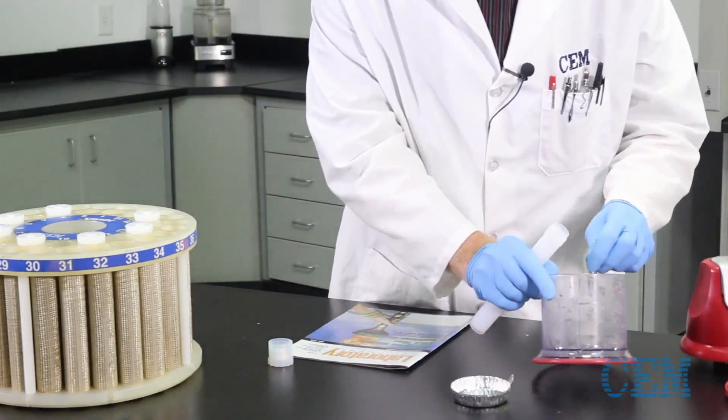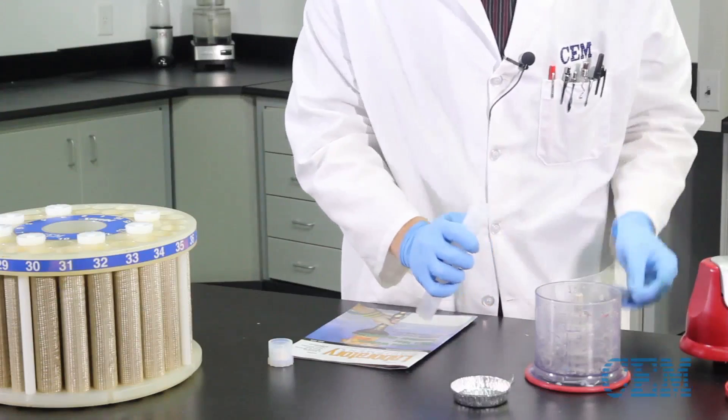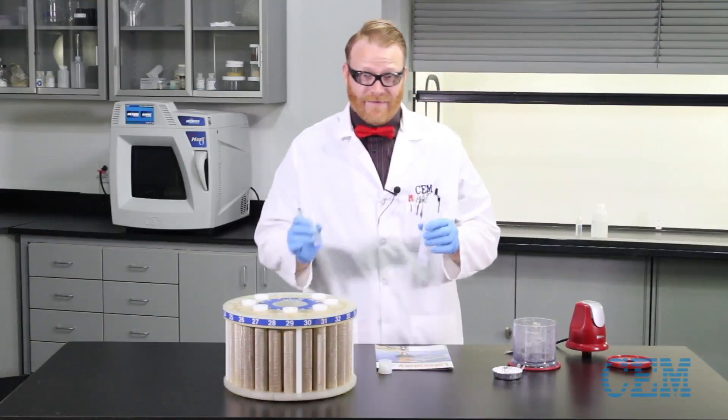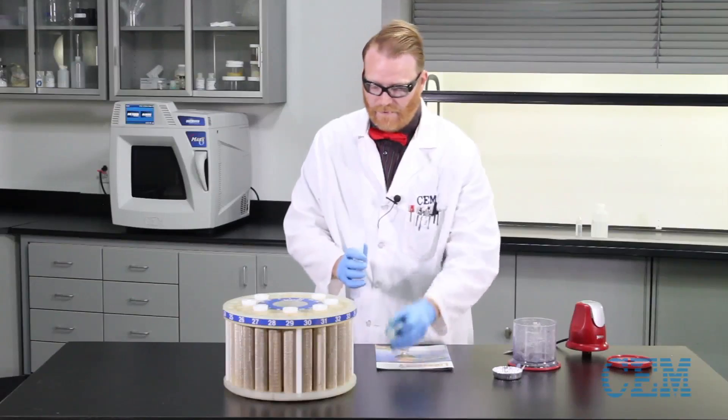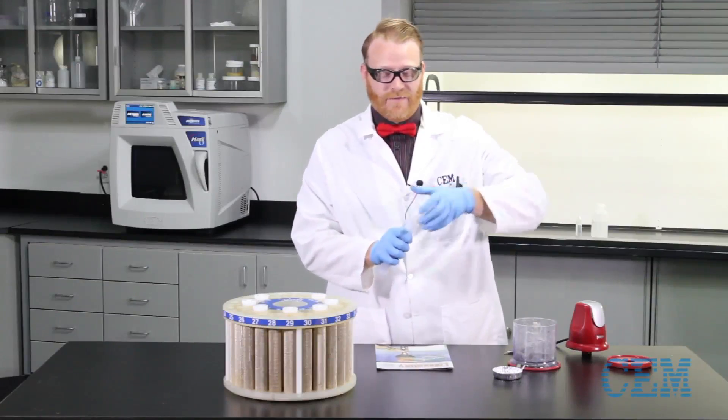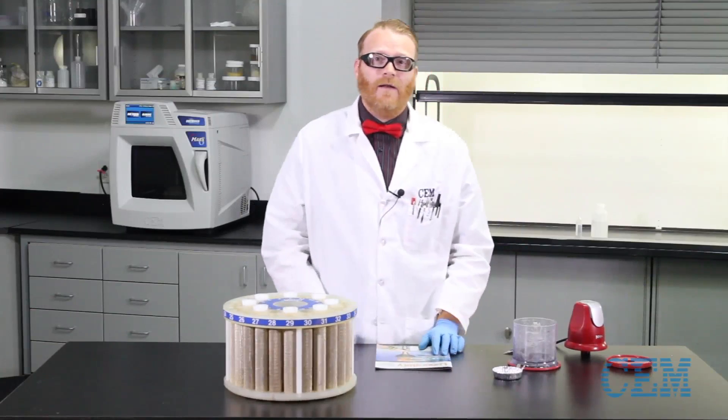We're going to take about a quarter of a gram of our shredded paper. We're going to add 10 mils of nitric acid. Cap our vessel. And we're ready to go to the microwave.